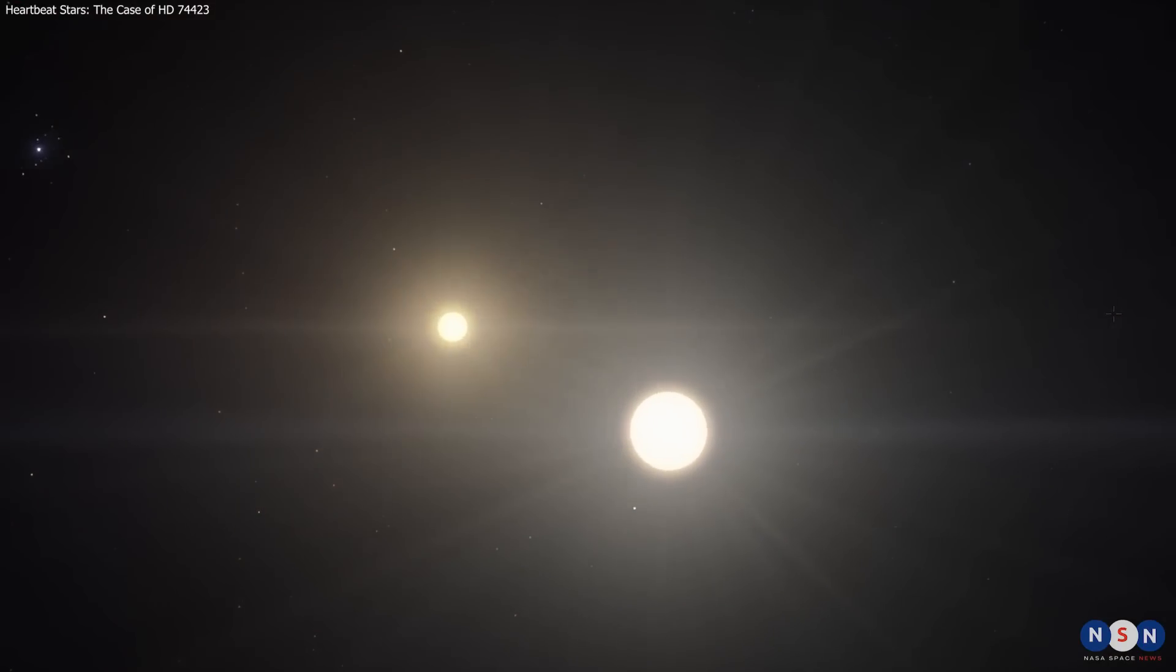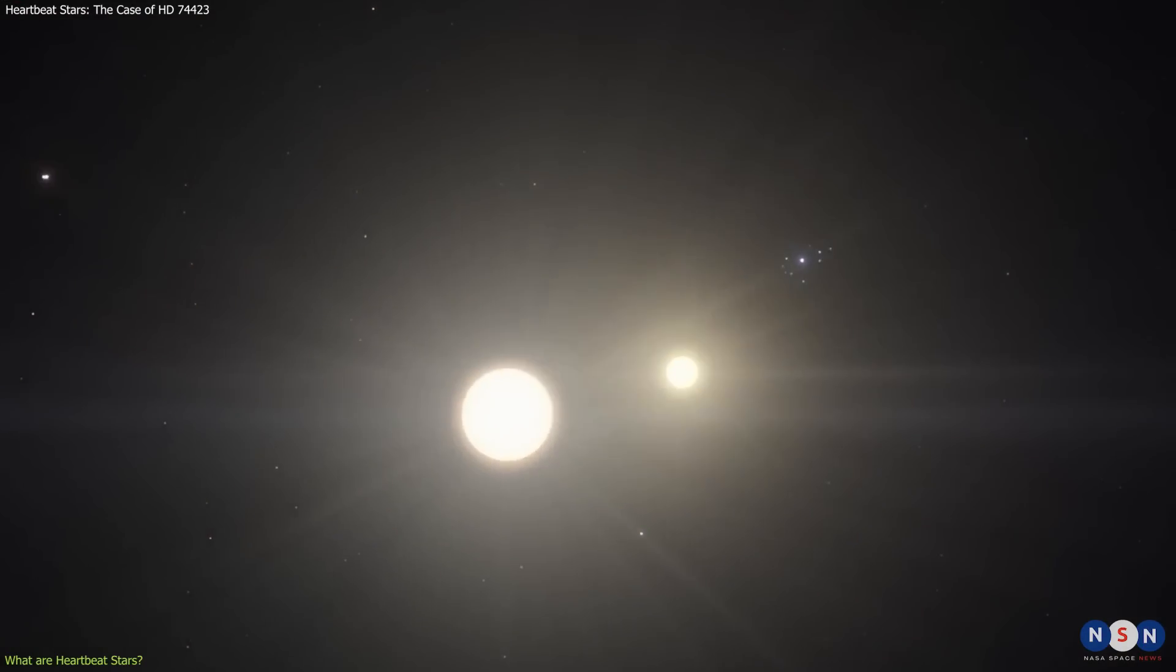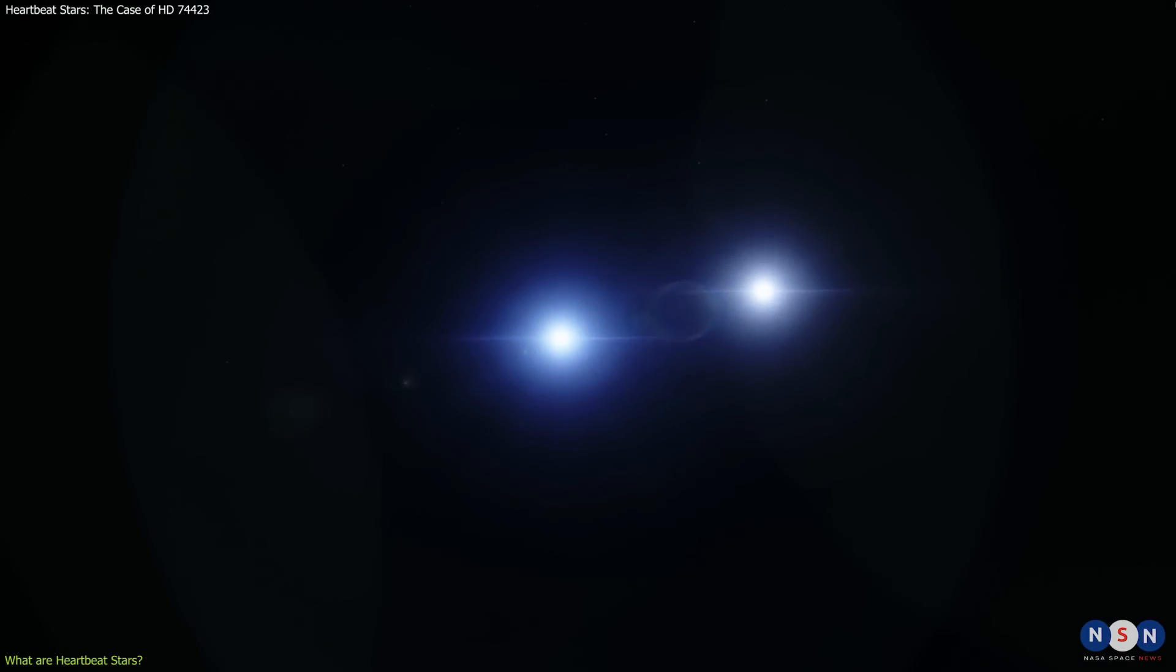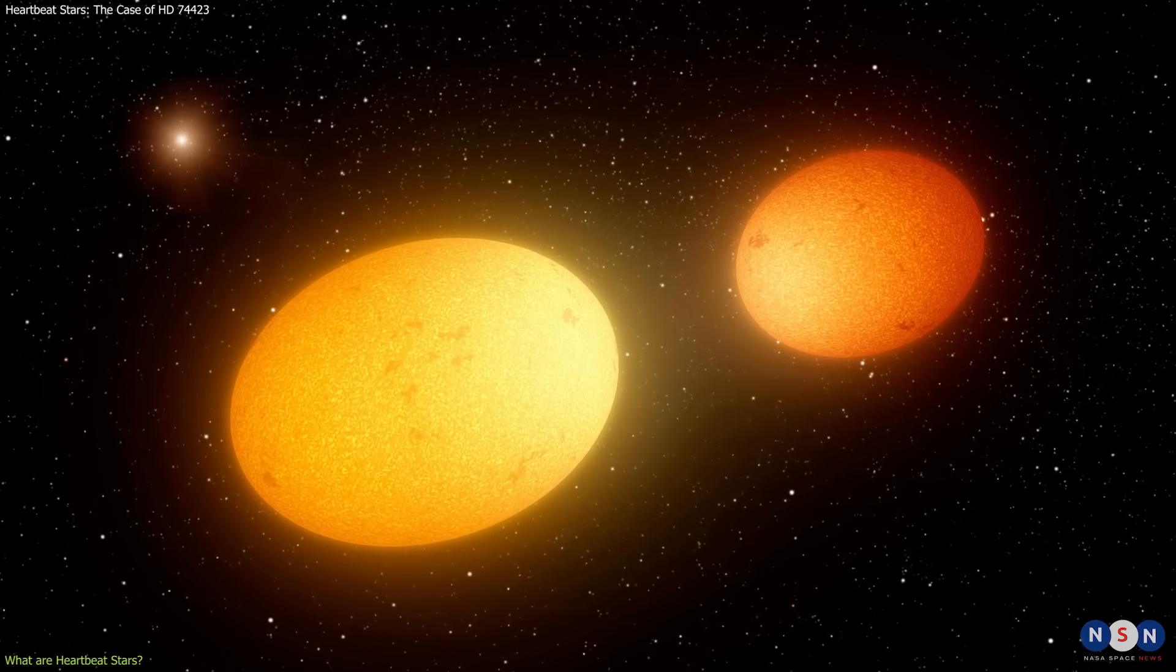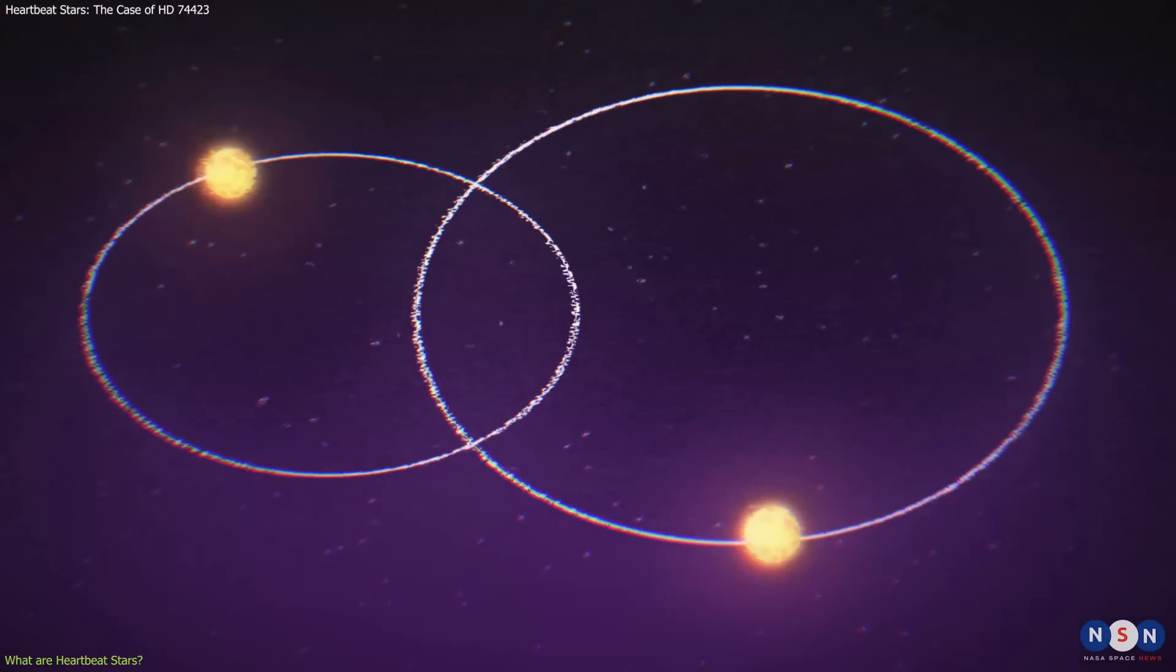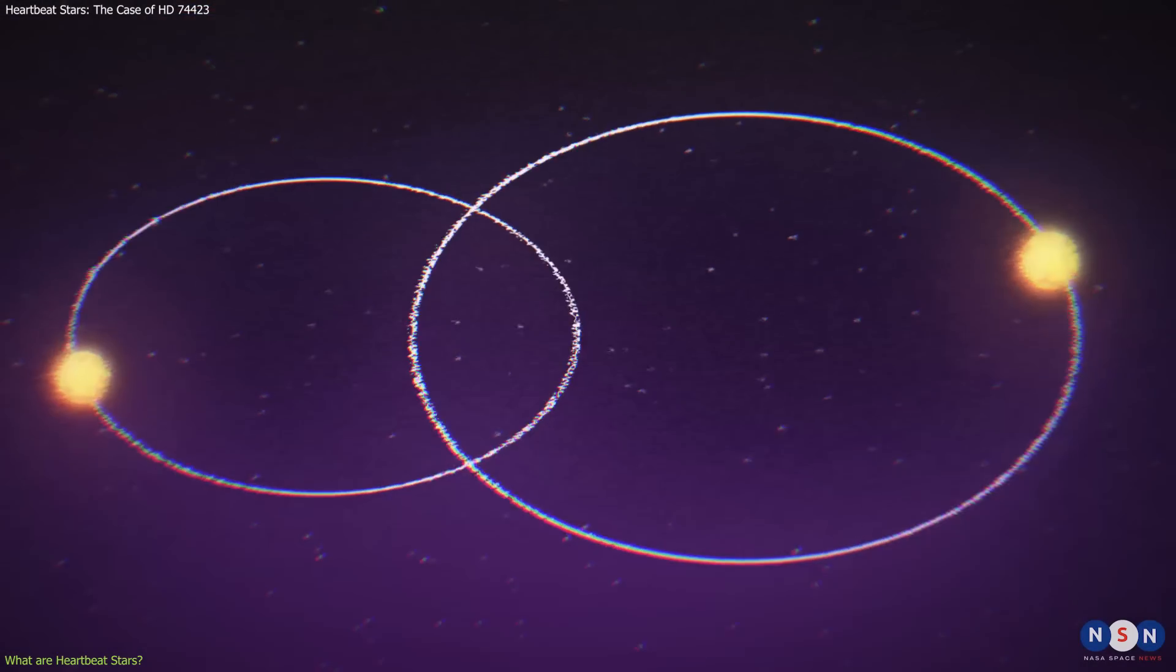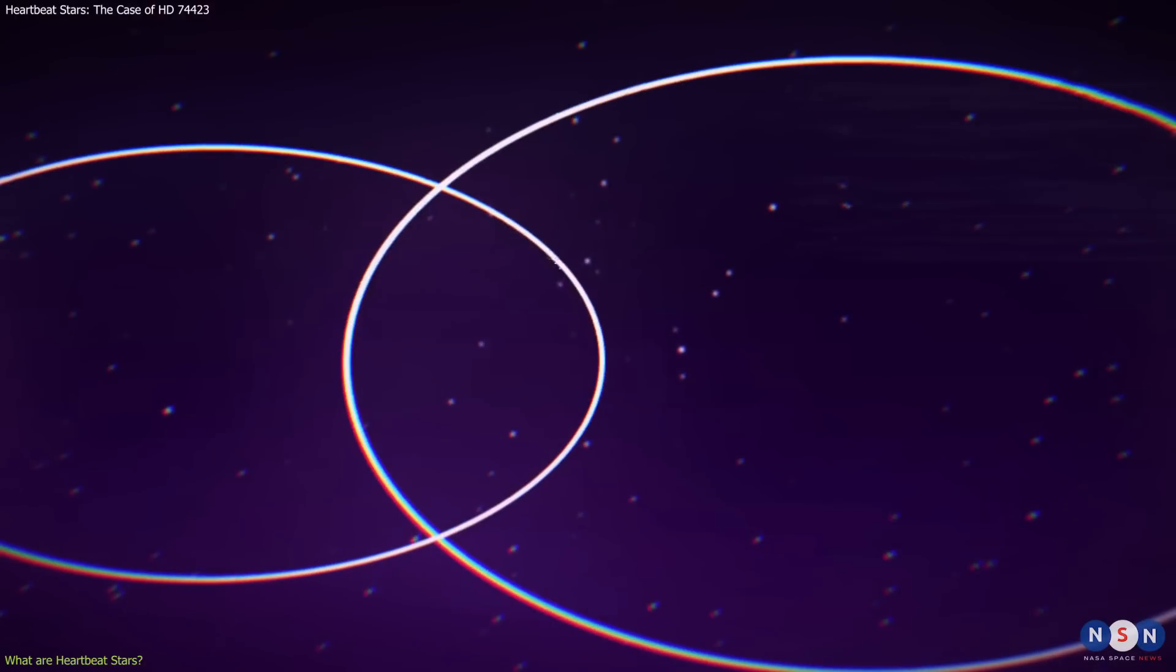So let's start with what are heartbeat stars. They are binary stars, meaning they are two stars that orbit each other around a common center of mass. But they are not ordinary binary stars. They have very eccentric orbits, meaning they are very oval-shaped and not circular. This causes the distance between the two stars to vary drastically as they orbit each other. Sometimes they are very far apart, and sometimes they are very close together.